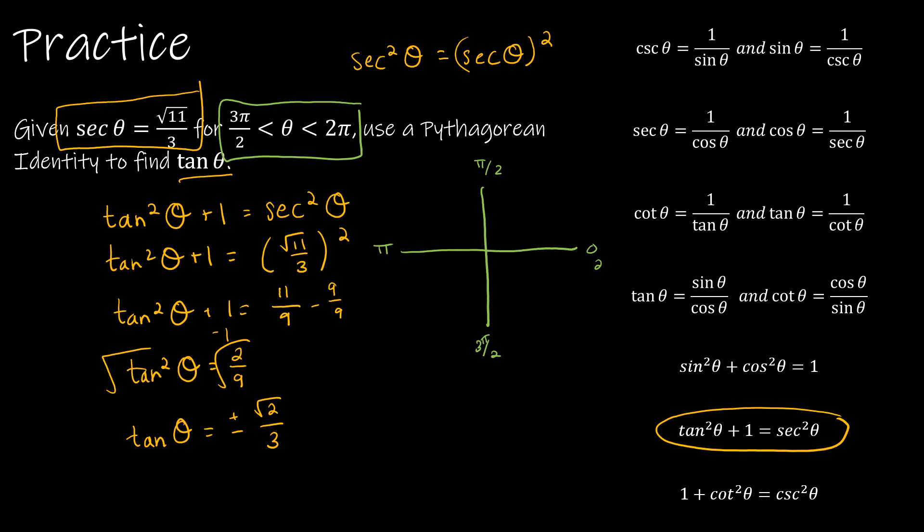And then of course, this would be 2 pi, and we would keep going. So what I'm looking for is a value here in this quadrant. This is the fourth quadrant.